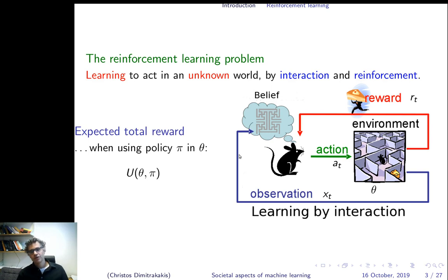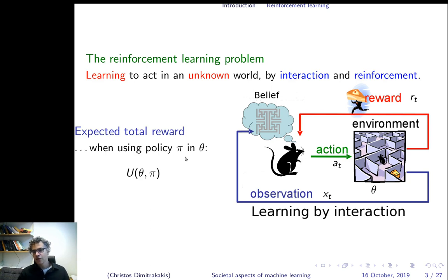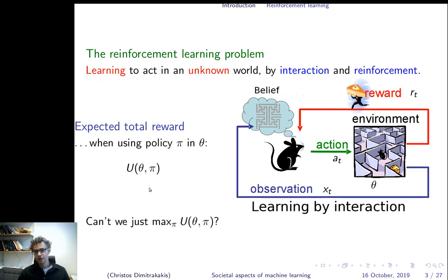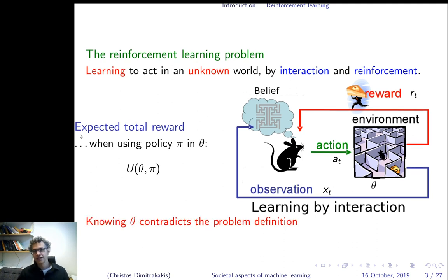Let's define a utility function U that tells us how much cheese the rat is eating. We need two variables: something about the world — let's call this theta — which is the layout of the maze and how often cheese is placed in different places; and the policy pi, which tells us how the rat behaves. For a given maze layout theta and a given policy pi, we have a different utility. For every possible layout, there is a maximizing policy — the best policy that gives you the most cheese. Can we find this maximizing policy? Yes, but we have to know theta. The problem is that theta is unknown — we don't really know what the maze looks like. We just have a belief about what it could be.